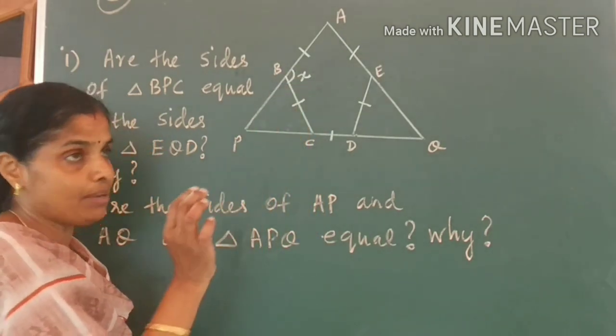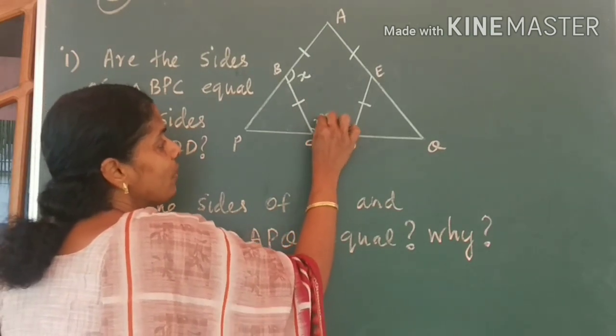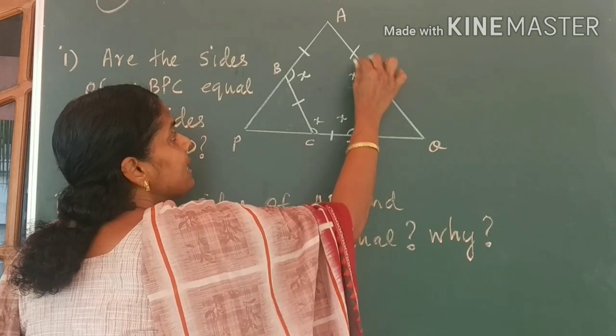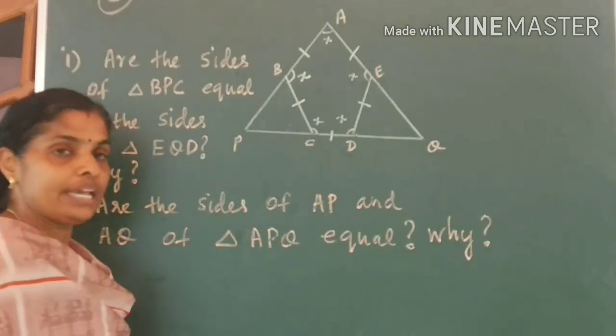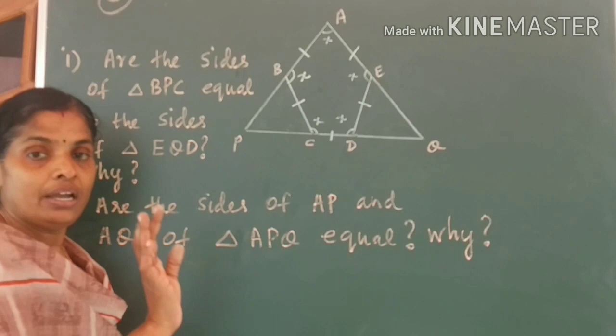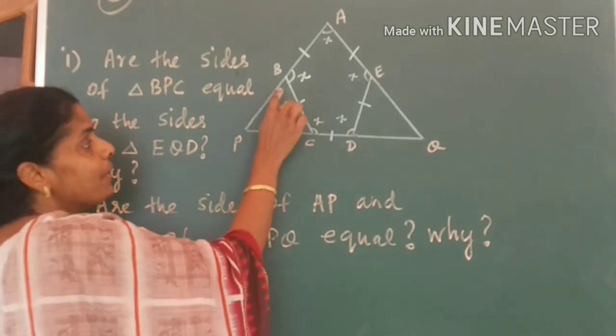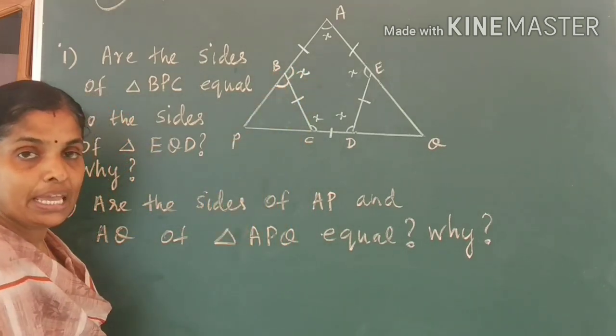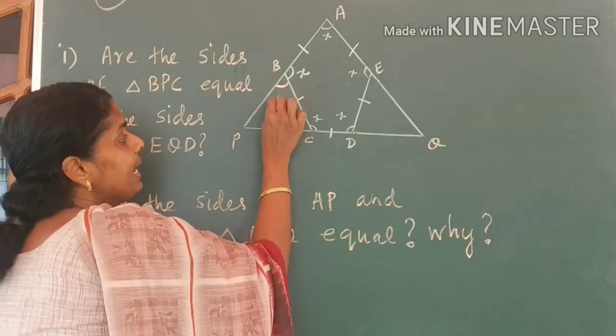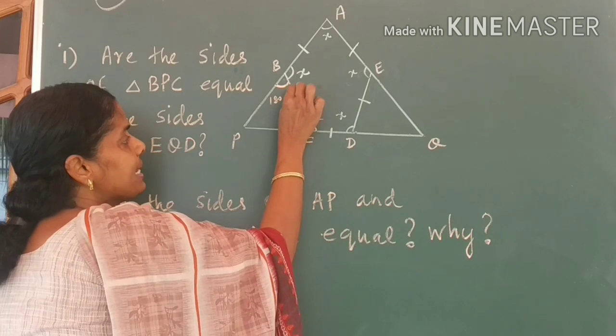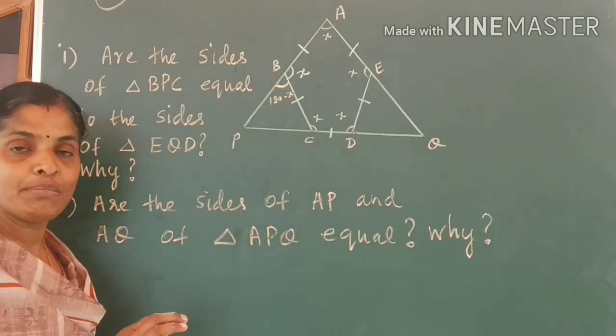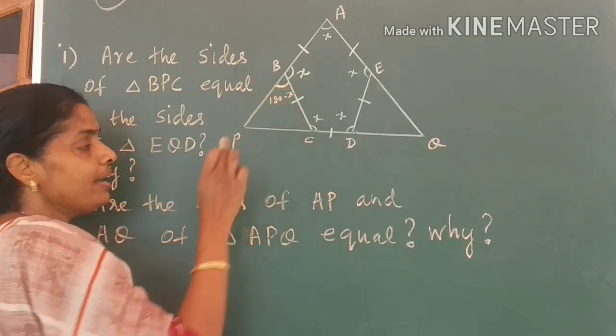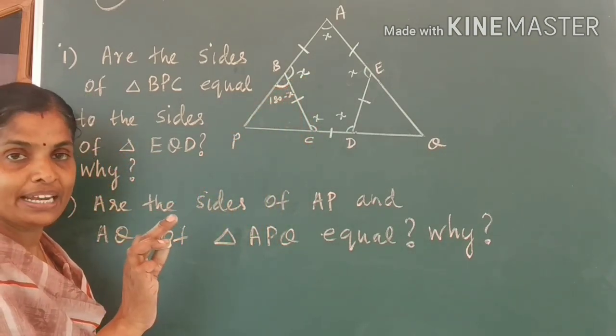Some variable. I marked it as X. Therefore, in this figure, all the angles formed here are equal to X. Now, what can you say about the angle, this angle will be equal to 180 minus X. Why do you get 180 minus X? Because the two angles here form a linear pair. Is it clear?